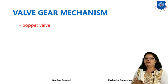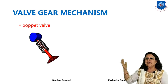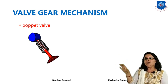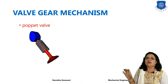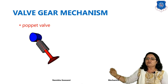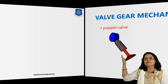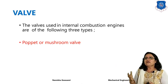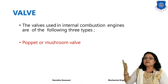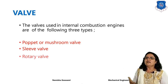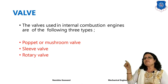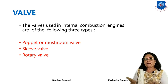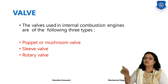Next is the poppet valve, also called the mushroom valve. The reason we focus on the poppet or mushroom valve is because we have to design it. In internal combustion engines there are basically three types of valves: first, the poppet or mushroom valve; second, the sleeve valve; and third, the rotary valve. However, the poppet or mushroom valve is generally preferred for practical applications.